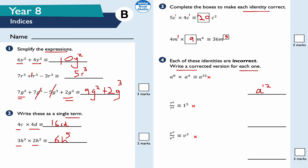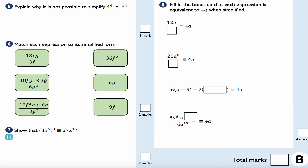Next: 7 to the 9 divided by 7 to the 4 is not 1 to the 5 — it's 7 to the 5. You keep the base number the same and subtract the powers; you don't divide 7 by 7. Next: v to the 9 divided by v cubed is not v cubed — it's v to the 6, because 9 minus 3 is 6. When dividing with the same base, subtract the powers.